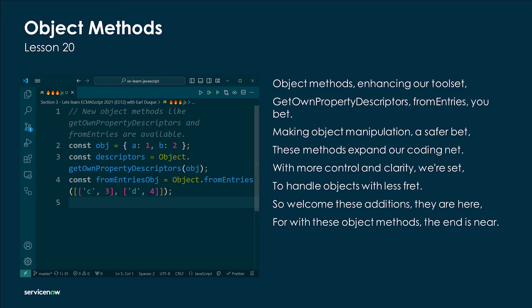Object methods enhancing our toolset — fromEntries, property descriptors, entries, you bet! Making object manipulation a safer bet, these methods expand our coding net. With more control and clarity we're set to handle objects with less threat. So welcome these additions — they are here, for with these object methods the end is near.